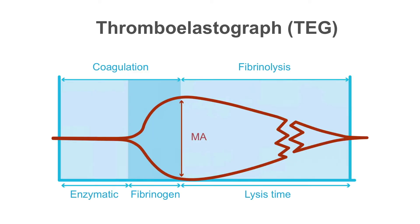Thromboelastography, or TEG, is a test for primary and secondary hemostasis. Platelet issues such as thrombocytopenia and thrombocytopathia are picked up by the value of MA. When MA values are low, it implies thrombocytopenia or thrombocytopathia. TEG can also pick up clotting factor deficiencies, manifested by a prolonged R value. TEG is also capable of detecting primary fibrinolysis, manifested by an increased LY30 time. Thromboelastography is discussed in detail in another section.